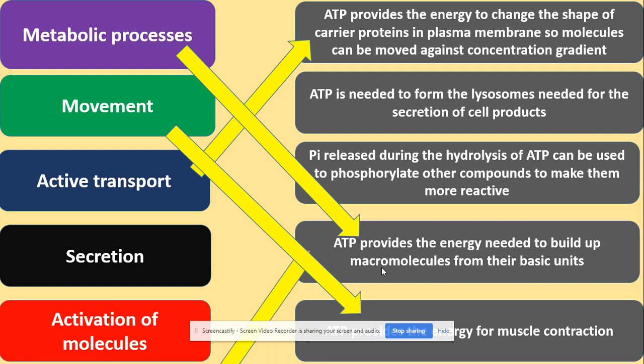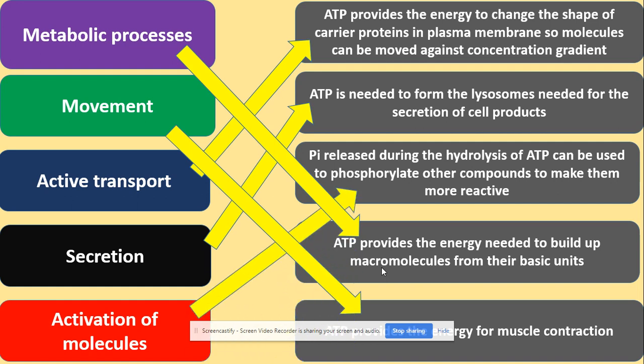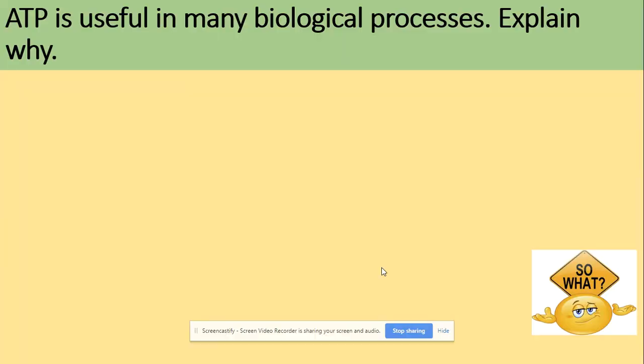For secretion, ATP is needed to form the lysosomes required for the secretion of cell products. For activation of molecules, the inorganic phosphate released during hydrolysis of ATP can be used to phosphorylate other compounds — for example, in the glycolysis reaction.